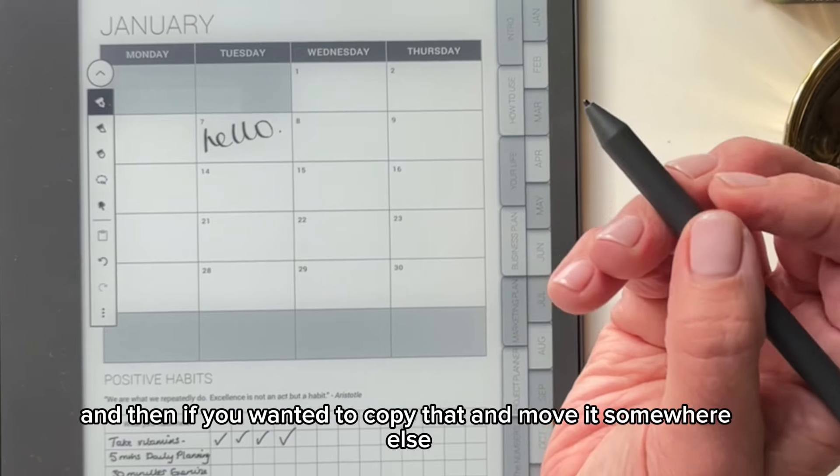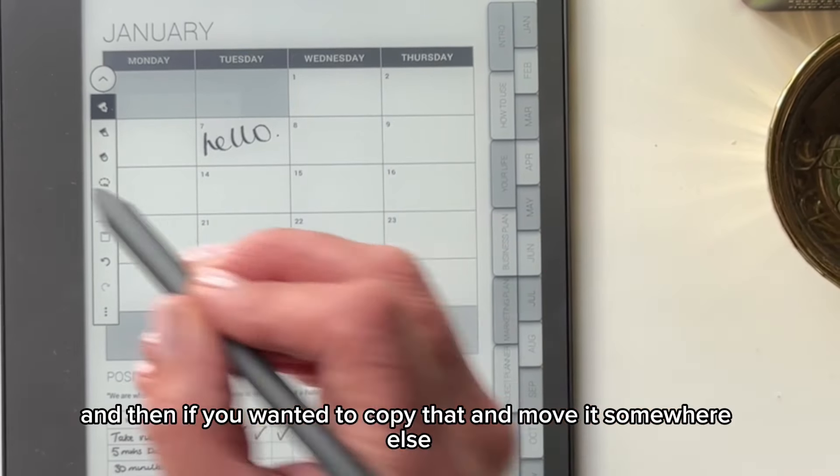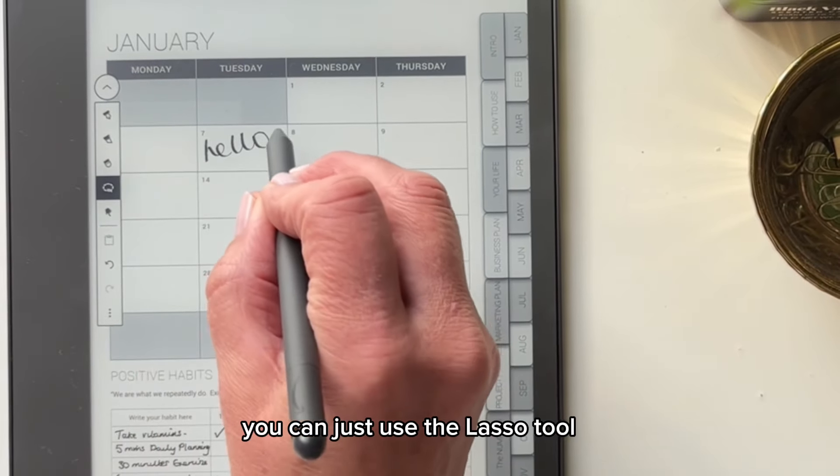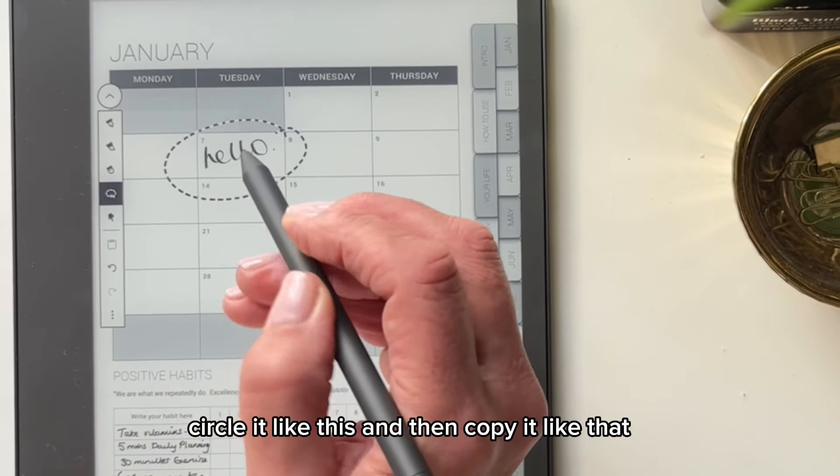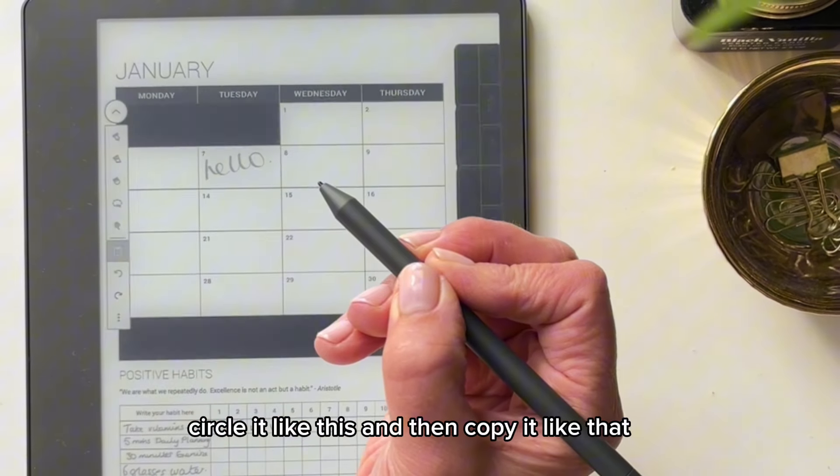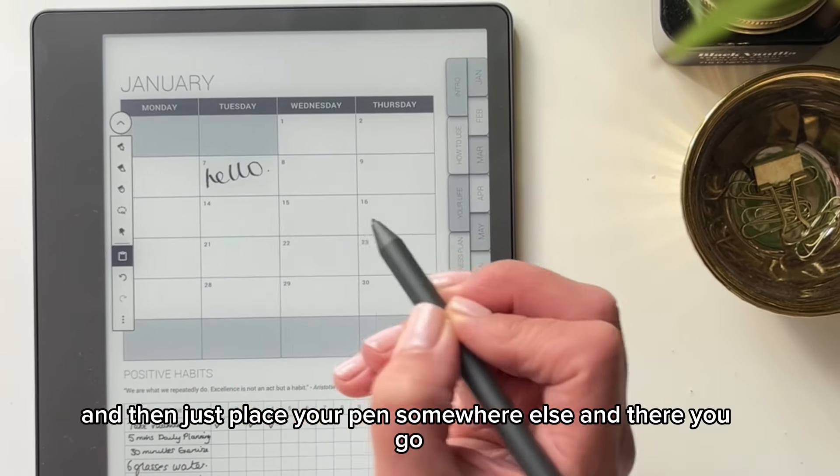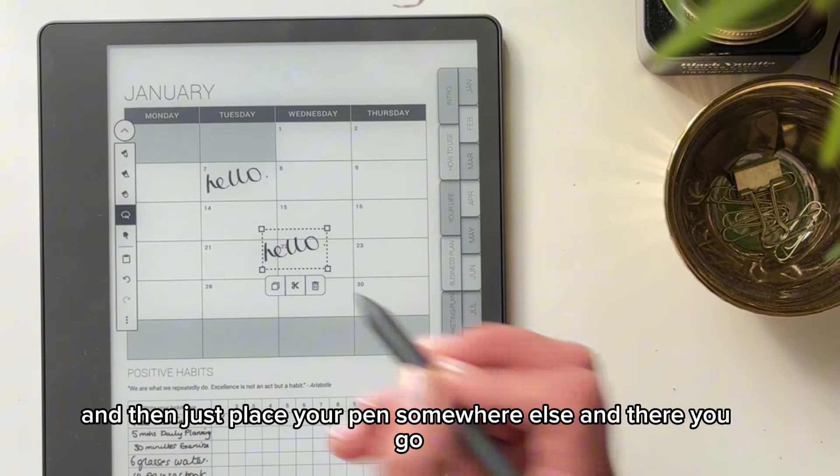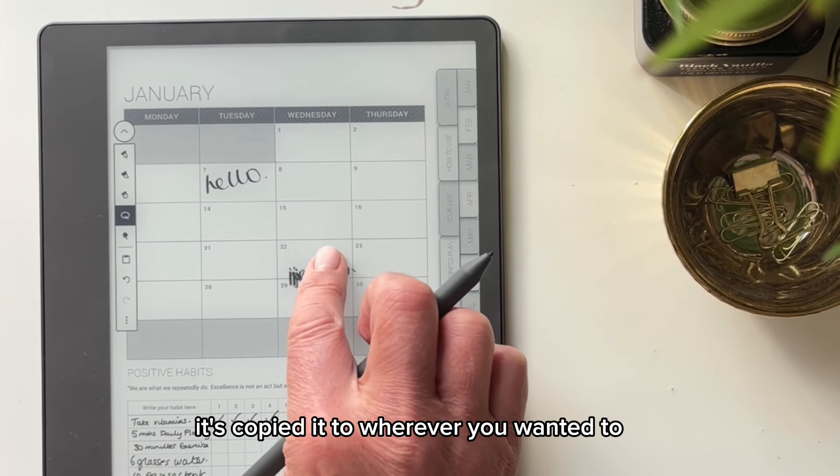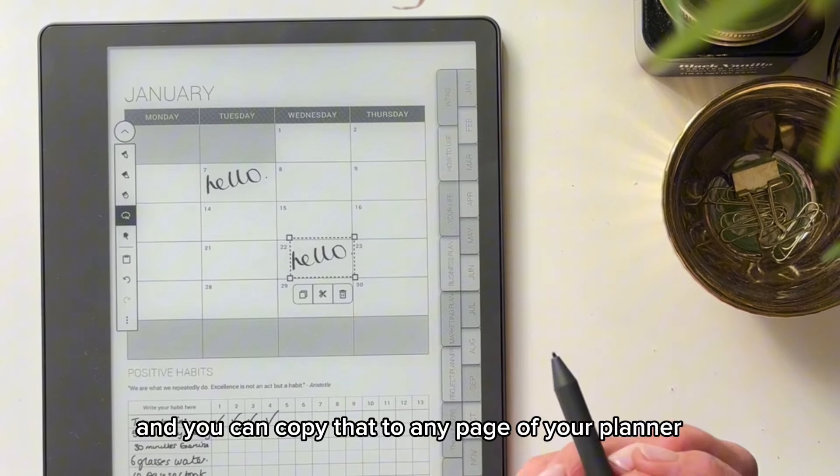So that's how you write. And then if you wanted to copy that and move it somewhere else, you can just use the lasso tool, circle it like this, and then copy it like that. And then just place your pen somewhere else. And there you go. It's copied it to wherever you wanted to. And you can copy that to any page of your planner.